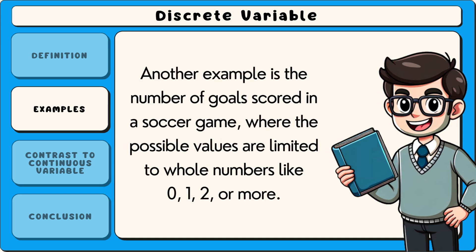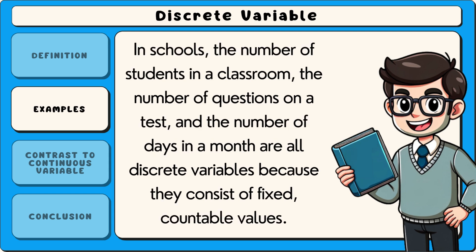Another example is the number of goals scored in a soccer game, where the possible values are limited to whole numbers like 0, 1, 2, or more. In schools, the number of students in a classroom, the number of questions on a test, and the number of days in a month are all discrete variables, because they consist of fixed, countable values.